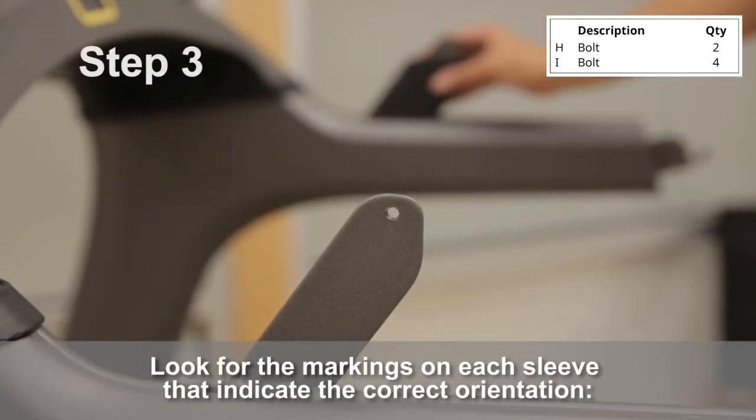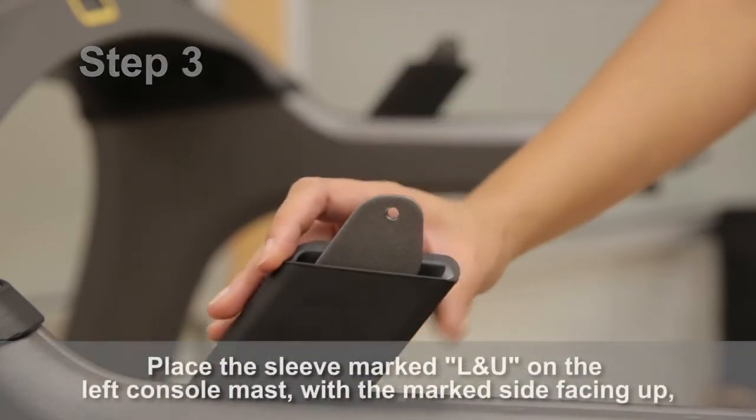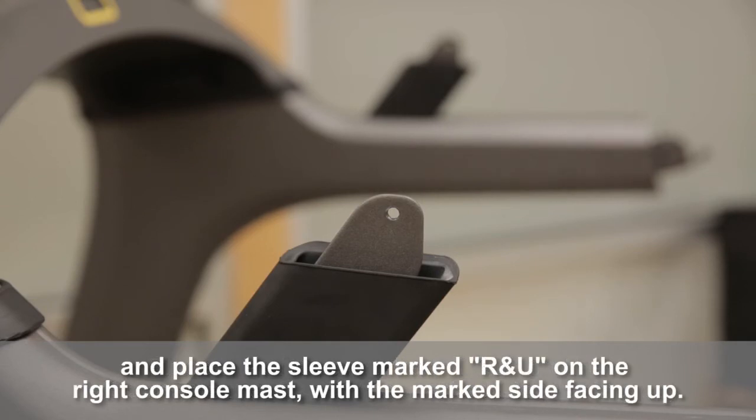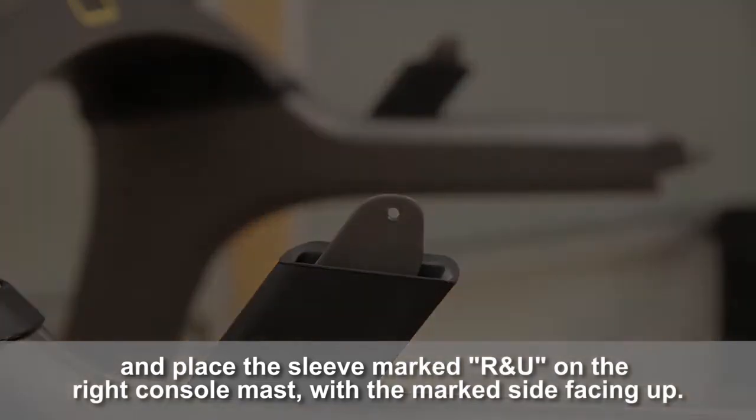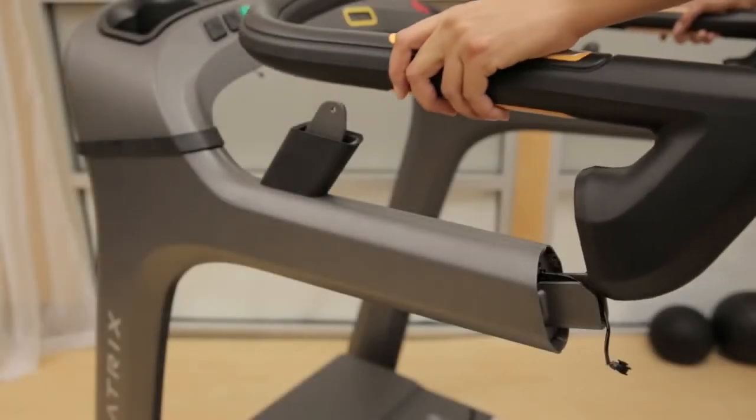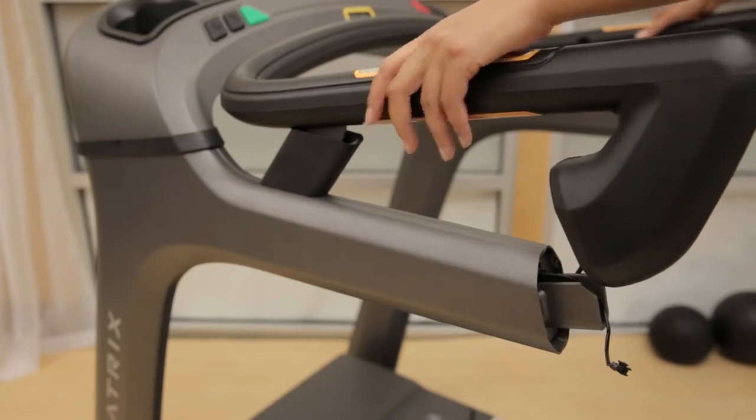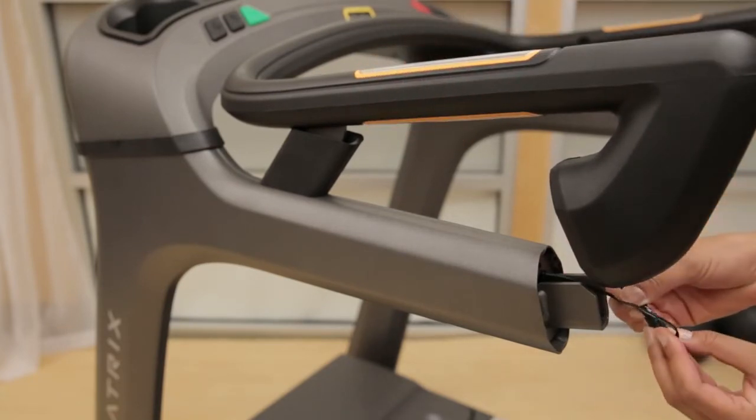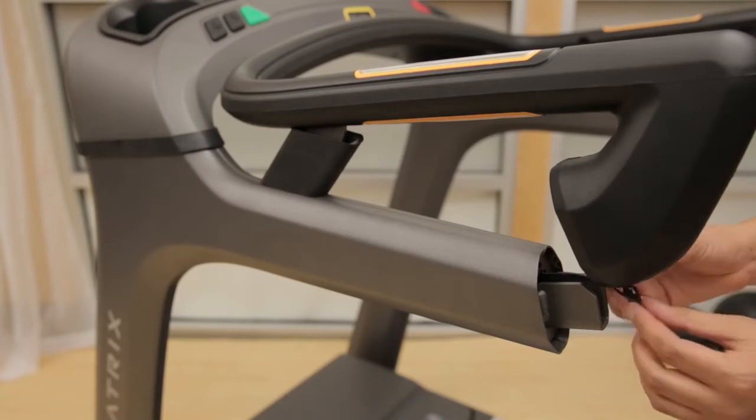Place the left and right handlebar sleeves onto the console masts. Set the handlebar onto the console masts to attach the wires. Then, tuck the wires into the mast and secure the handlebar to the masts.